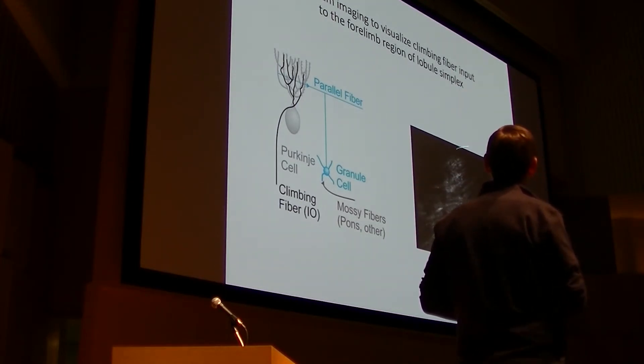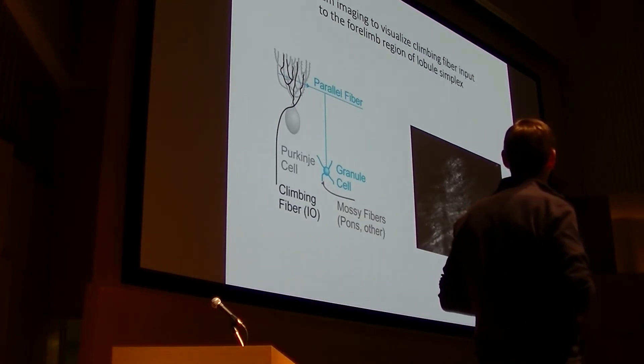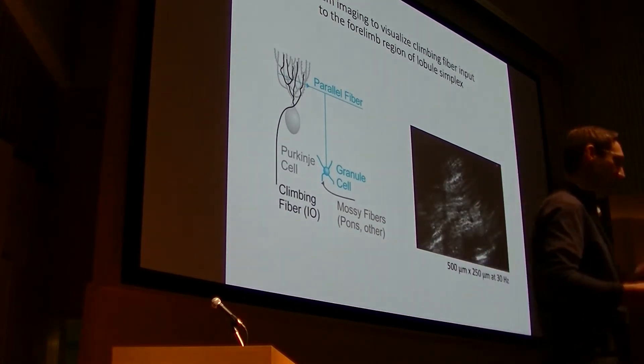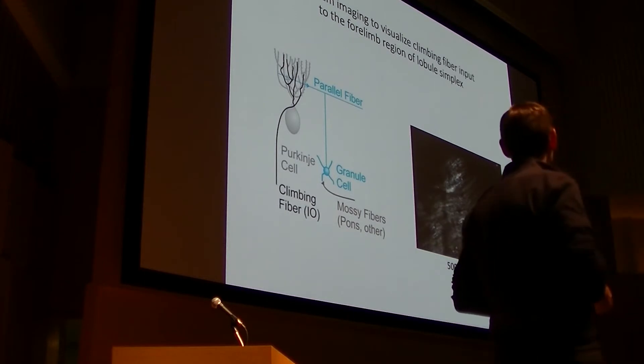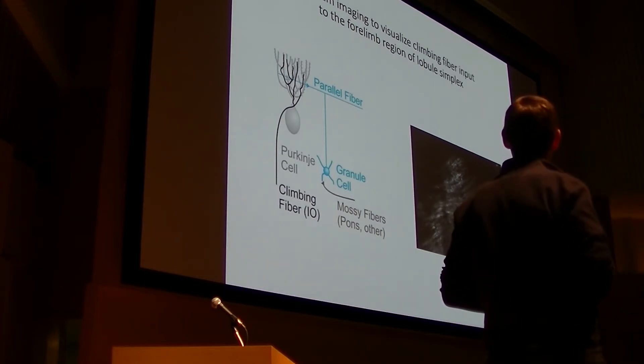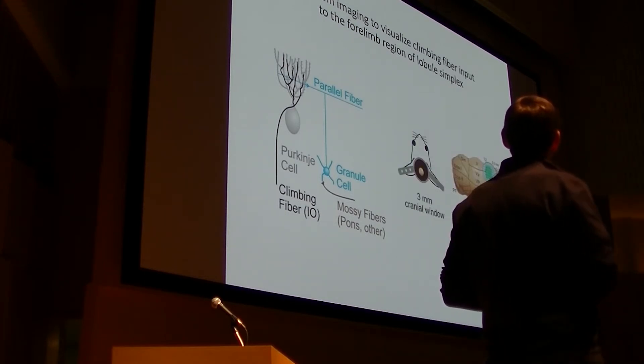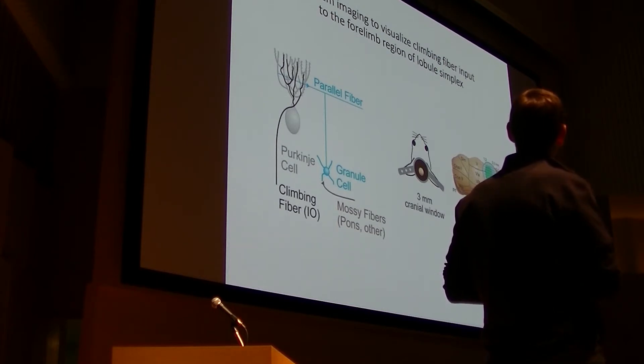An example of which is shown here, where we're collecting at 30 hertz, and you can see that the complex spikes are the climbing fiber input that produces these calcium transients in the dendrites of Purkinje cells. And we've validated that these are in fact climbing fiber inputs using electrophysiology.